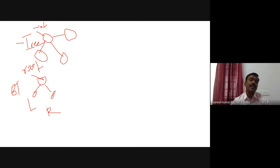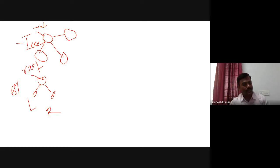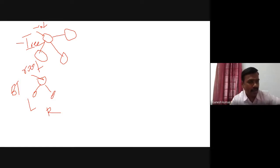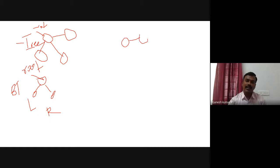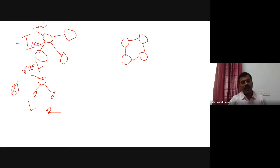But when you take the case of a general tree, you cannot limit the number of branches. You can have any number of branches. If you draw a graph, that graph is also treated as a nonlinear data structure. This nonlinear data structure represents a topographical relationship, whereas a tree is meant for a hierarchical relationship. A graph is meant for a topographical relationship.